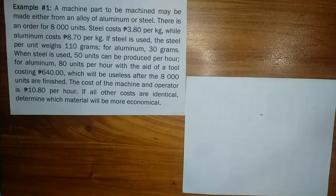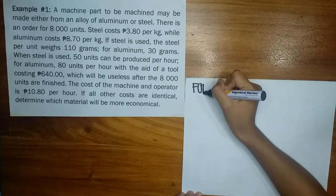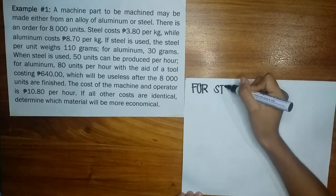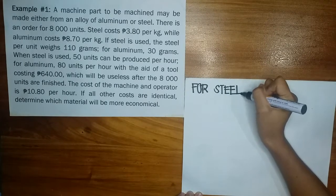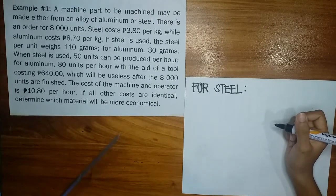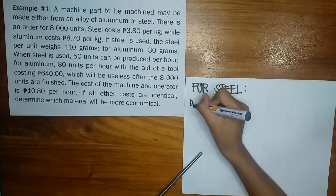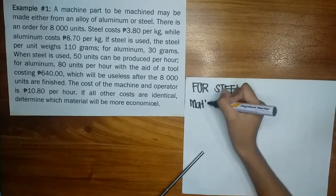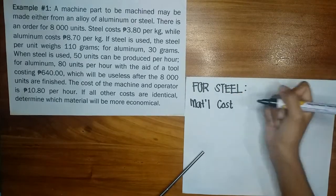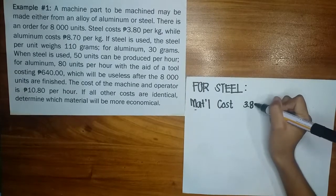So for this example, we're going to compare two materials: steel and aluminum. Let's first solve for steel. For steel, what will be our expenses? We have 3 pesos and 80 centavos per kilogram. Let's write down the material cost. So the material cost is 3.80 pesos.